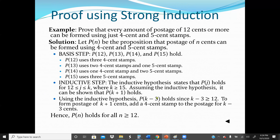Now the inductive step: the inductive hypothesis states that P(j) holds for j greater than or equal to 12 and less than or equal to K, where K is greater than or equal to 15. Assuming the inductive hypothesis, it can be shown that P(K+1) will hold. Using the inductive hypothesis, P(K-3) holds since K-3 is greater than or equal to 12. To form postage of K+1 cents, we add one 4-cent stamp to the postage for K-3 cents. Thus P(N) holds for all N greater than or equal to 12.